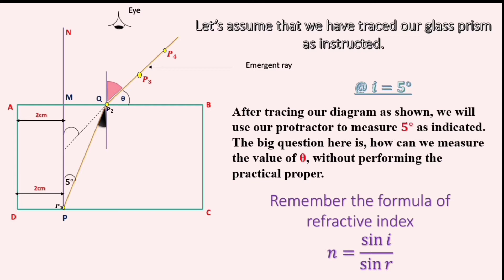I know you've taken note of that. Don't get confused when I use i as a different value. Throughout this experiment, the values of i that we have been given are 5, 10, 15, 20, and 25 degrees.